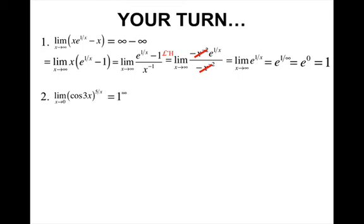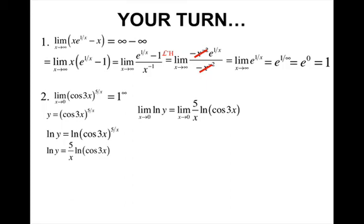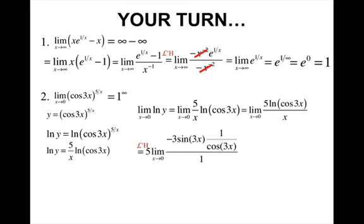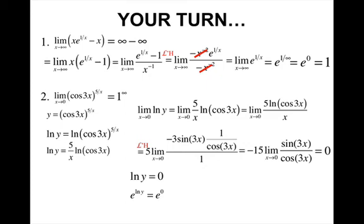For number 2, plugging in 0 gives 1 to the infinite power. Let y = (cos(3x))^(5/x), take the natural log of both sides, and bring down the 5/x. Taking the limit of both sides and writing as one fraction gives 0/0 — apply L'Hopital's Rule, simplify, plug in 0 to get 0. Since ln(y) = 0, exponentiating gives y = 1, so the limit equals 1.